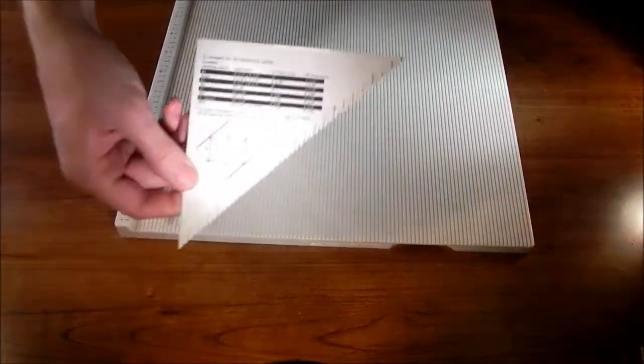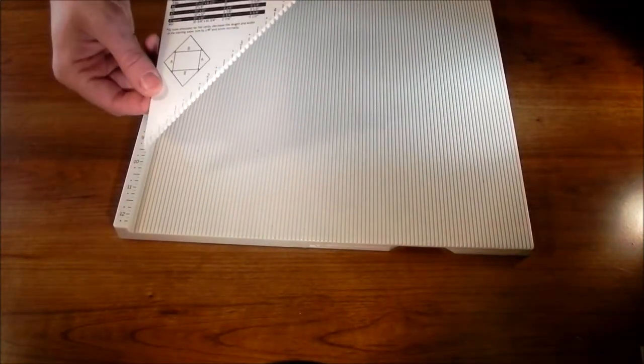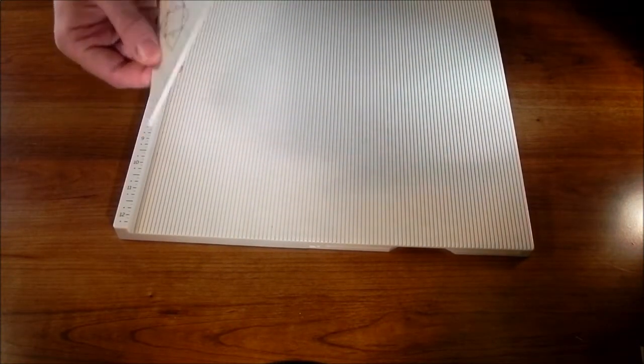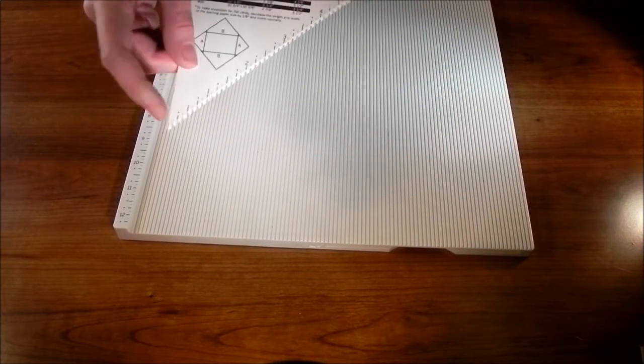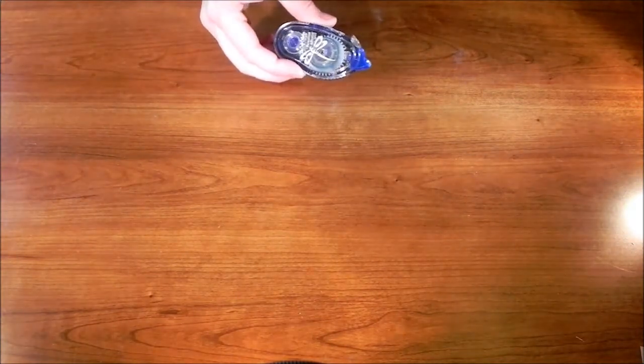You're going to need a scoreboard, and hopefully your scoreboard has this angle tool. If it doesn't, you can use a heavier piece of cardstock that you cut to an angle and then just mark the inches up the side. A bone folder is always helpful, and some tape.